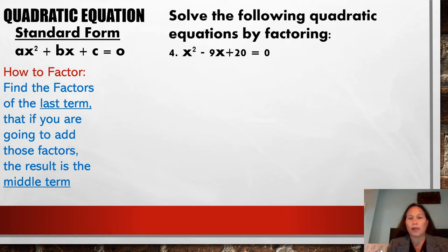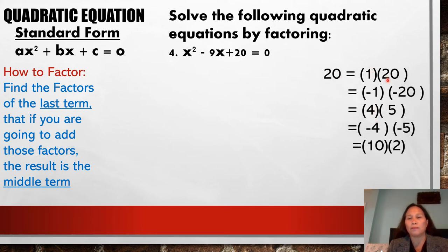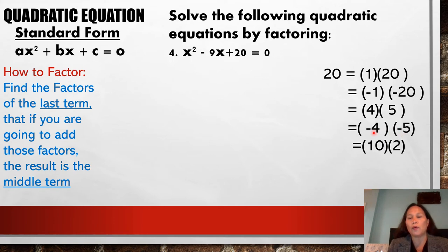Let's have another one: x squared minus 9x plus 20 equals 0. We have 20 here. What factor combinations of 20, when added, give negative 9? Combinations: 1 times 20, negative 1 times negative 20 — still positive 20. 4 times 5, and negative 4 times negative 5. When added: 1 plus 20 is 21; negative 1 plus negative 20 is negative 21; 4 plus 5 is positive 9. But negative 4 plus negative 5 is negative 9. When adding numbers with the same sign, add their values and keep the sign. So we choose negative 4 and negative 5.